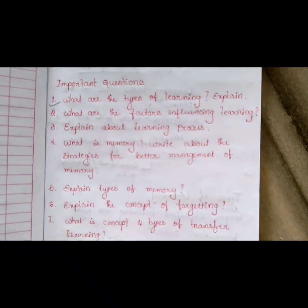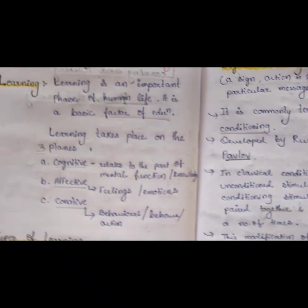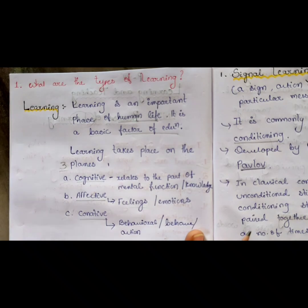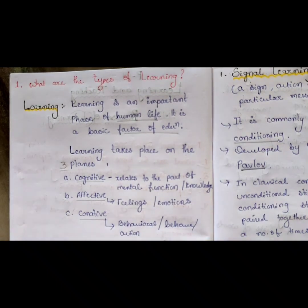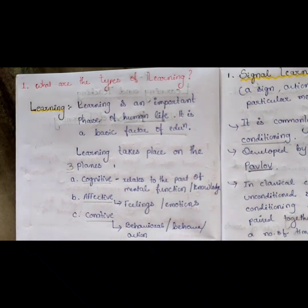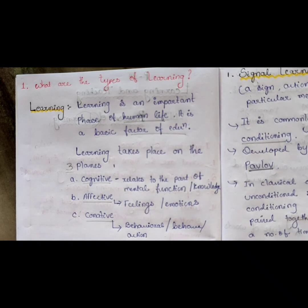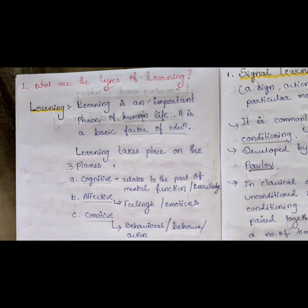Question nine: methods of improvement of motivation. These are the nine important questions. Now we'll do the first one. The first question is: what are the types of learning? Learning means to learn something — to acquire some knowledge, acquire some skill. Acquiring something is what learning means.